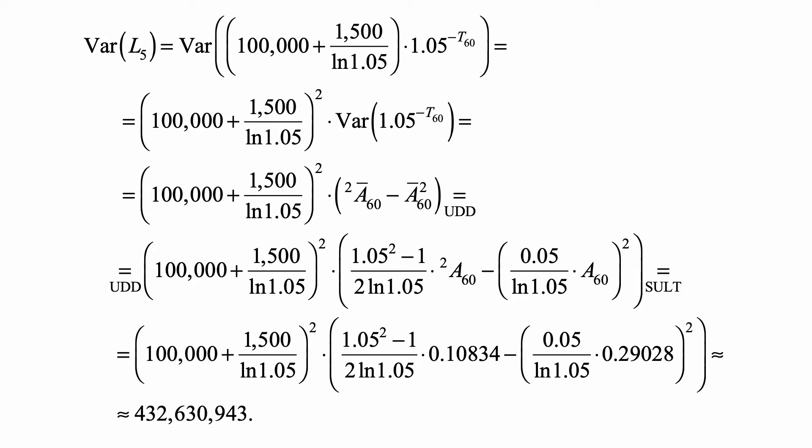Of course, the second part is the variance of life insurance issued at age 60. So that's ²a̅₆₀ minus (a̅₆₀)². We can look up those values in the table.